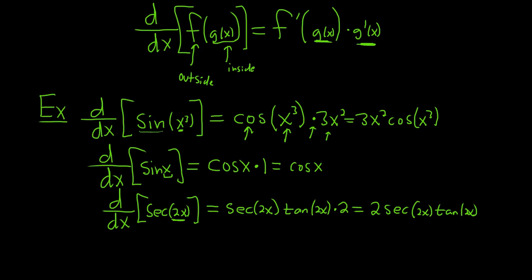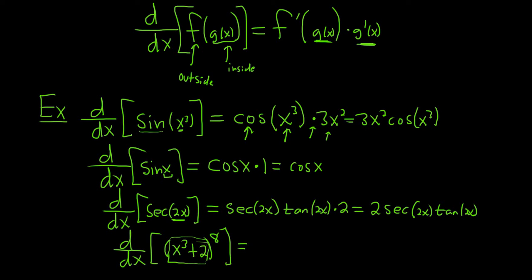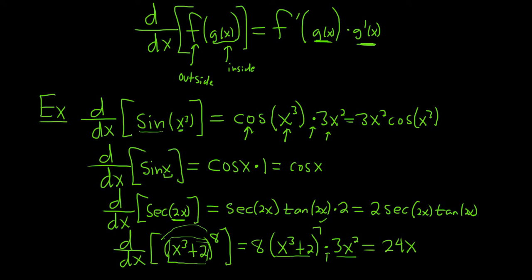Let's do something without a trig function: d/dx of (x cubed plus 2) to the 8th. Our outside function is something to the 8th power, and the inside is x cubed plus 2. We leave the inside untouched, bring the 8 to the front, so we have 8 times (x cubed plus 2) to the 7th — that's the power rule — times the derivative of the inside, which is 3x squared. So the answer is 24x squared times (x cubed plus 2) to the 7th.